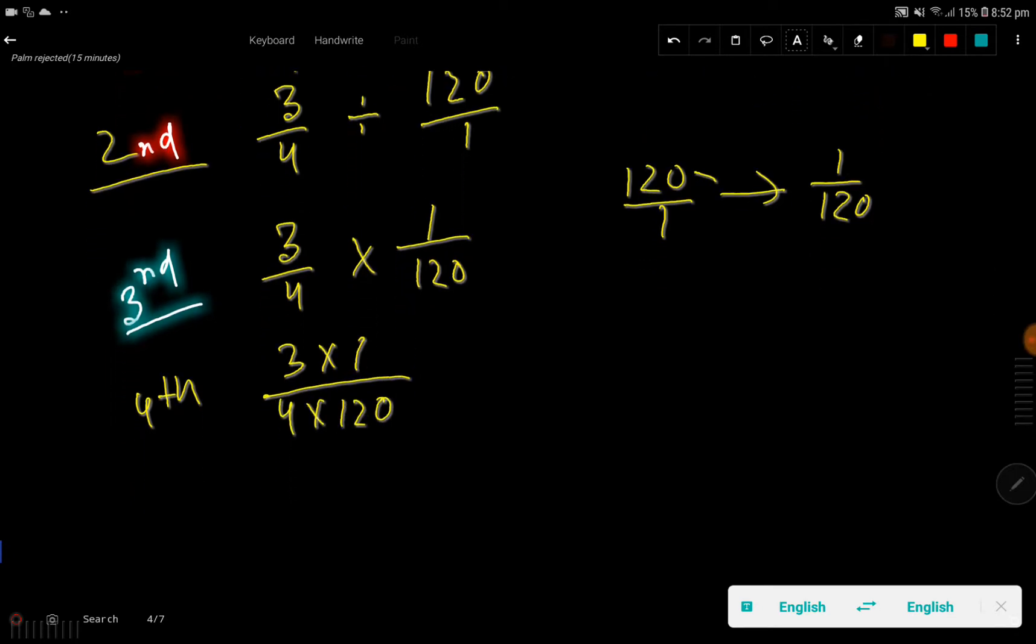We can simplify this thing. So if I divide this 3 by 3, I will get 1. If I divide this 120 by 3, then I'll get 40. So basically we are getting here 1 times 1 divided by 4 times 40.